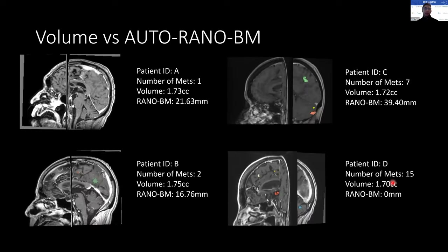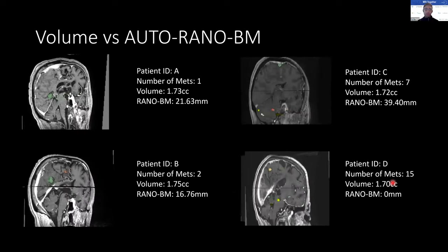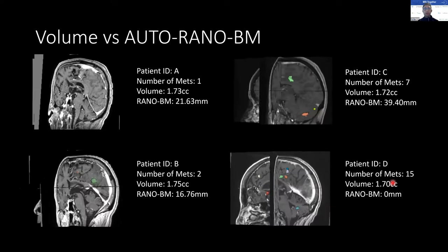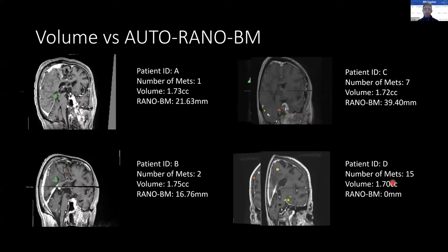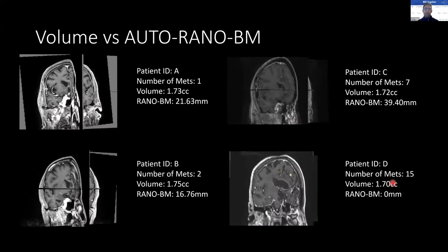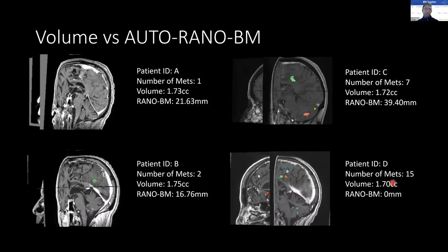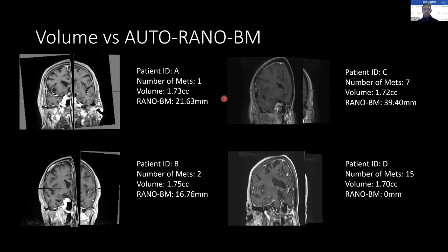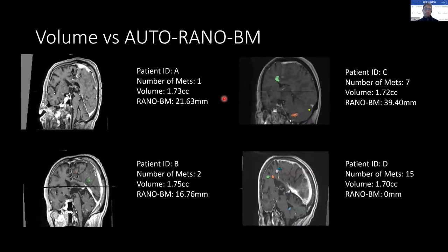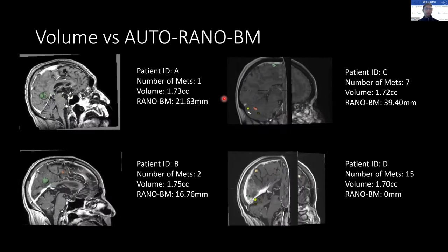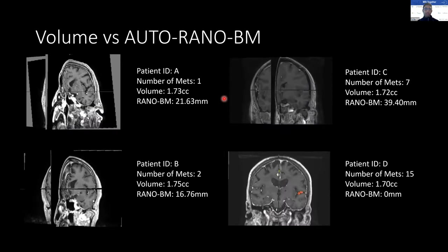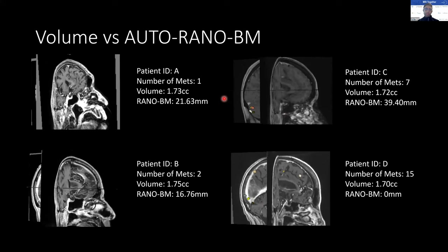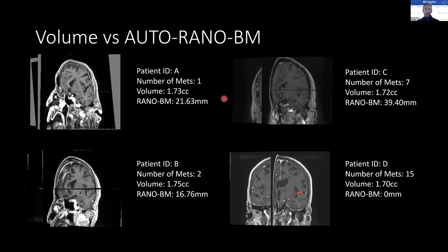Finally, I'd like to mention the difference between RANO and volumetric burden. Because RANO BM is a unidimensional measurement summing up to five target lesions, there's essentially no correlation with volume. As these segmentation tools become more prevalent and the bugs are ironed out, we need to start considering whether RANO BM is the best metric on which to base response assessment, and pose that same question for RANO primary gliomas.